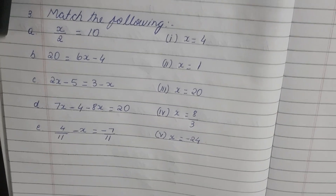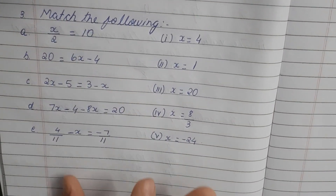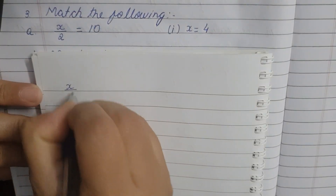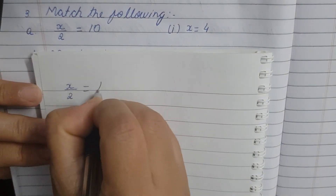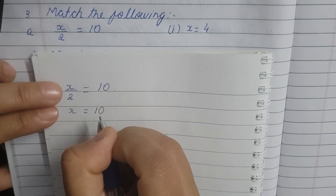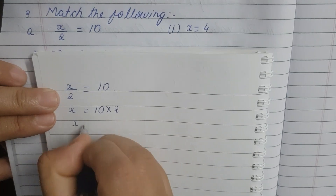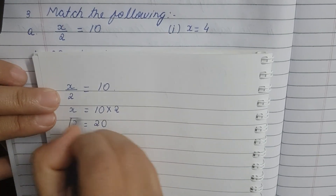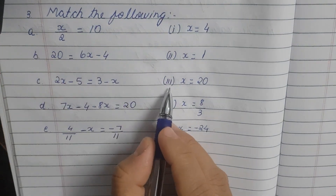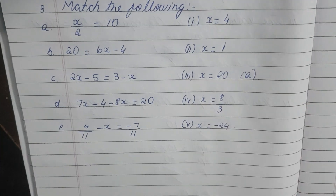Match the following: x by 2 is equal to 10. To find the value of x, the right hand side portion — the divide — will become multiplication, so x is equal to 20. This is the answer for x by 2 equals 10, and it is option number 3.